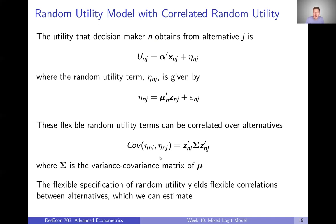Having this more complex random utility term gives us fully flexible correlations among those random utility terms for our different alternatives. The covariance between any two eta terms for different alternatives for the same individual is going to be a function of the z's — the data that go into this format — and this big sigma matrix, which is the variance-covariance matrix of mu, the randomness. So essentially, the covariance between any two alternatives for an individual is a function of either data or variables we define, and variances and covariances we estimate in our model.